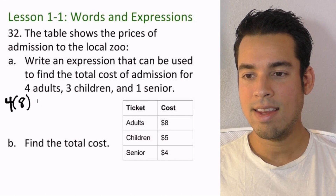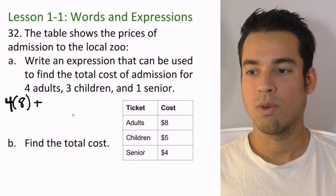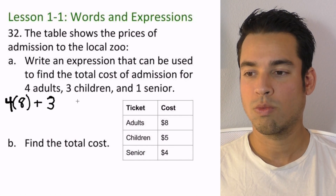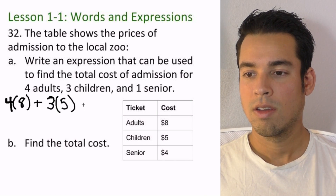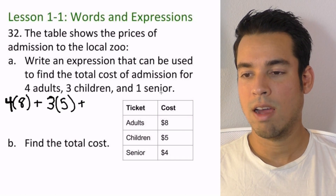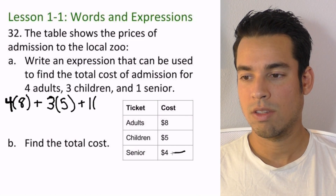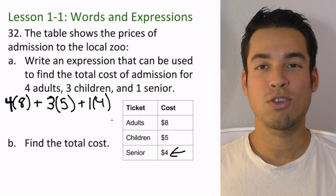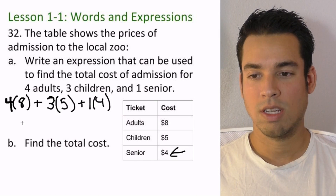That covers the price of the 4 adults. Now we've got 3 children — the cost for children is $5, so that's 3 times 5. Plus, finally, we're adding 1 senior, so we multiply 1 by the senior price of $4. And there's our expression: 4×8 + 3×5 + 1×4. Now it says to evaluate it — find the total cost.